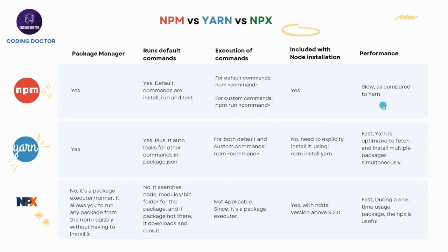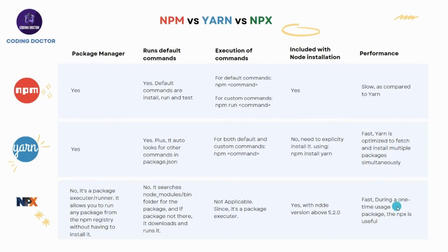npm is on the slower side compared to yarn. Yarn is optimized to fetch and install multiple packages in parallel, making it faster. npx is also super fast for one-time package use cases.